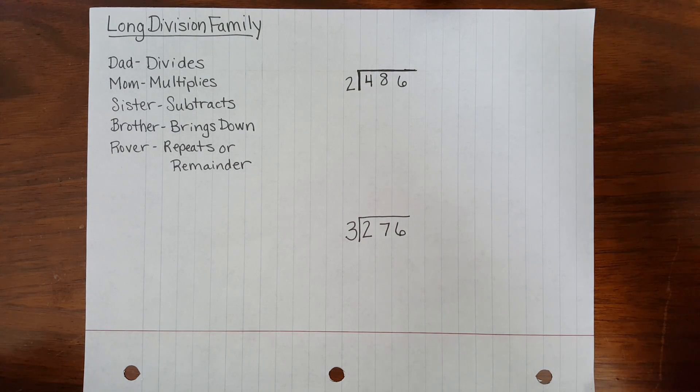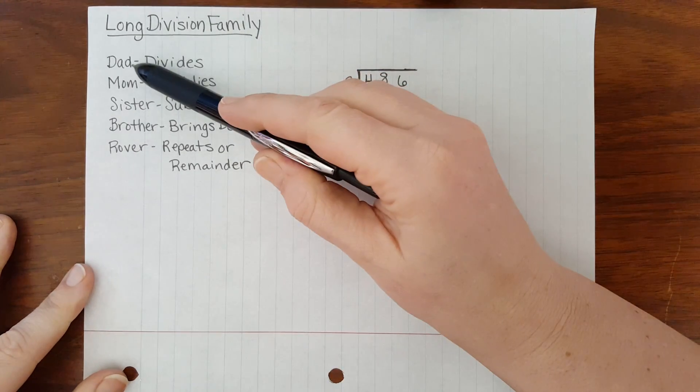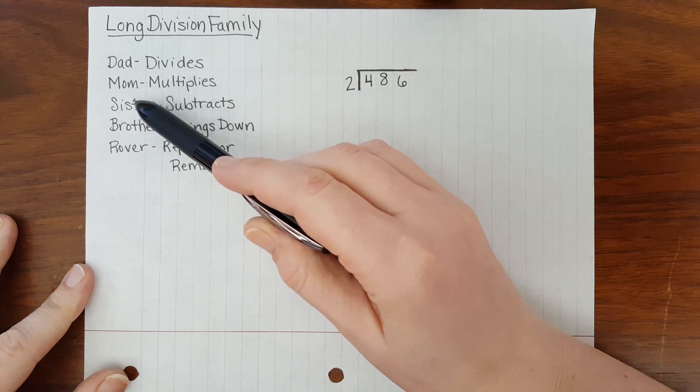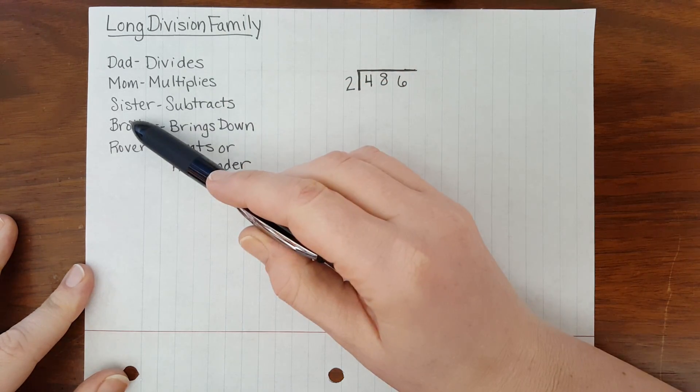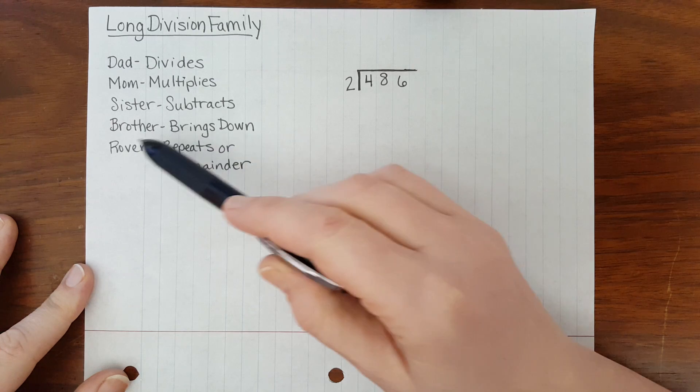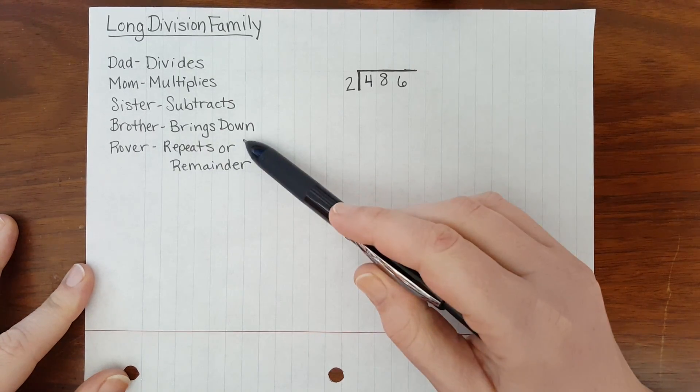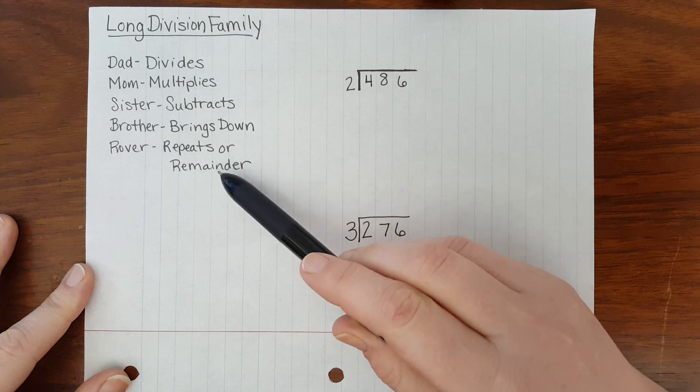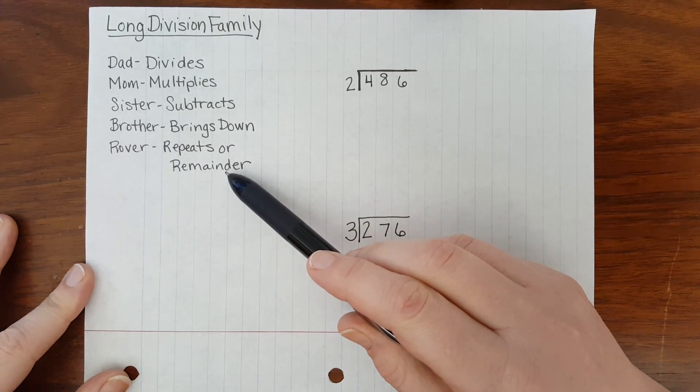Let's review the steps to long division using our family. Remember, dad divides first, mom multiplies, sister subtracts, brother brings down, and finally rover repeats or puts the remainder in the quotient.